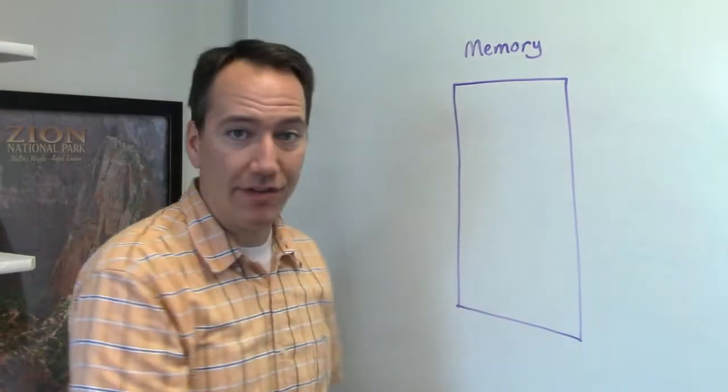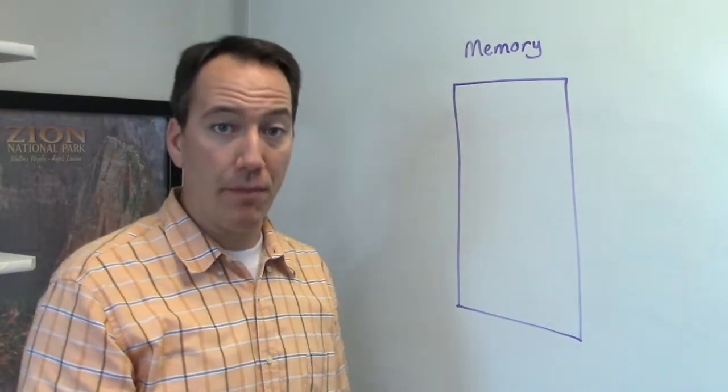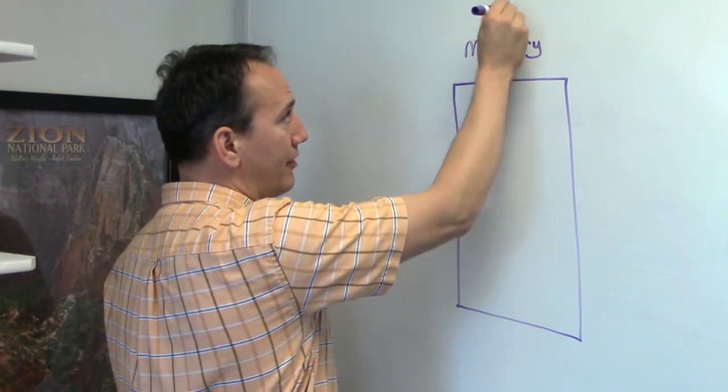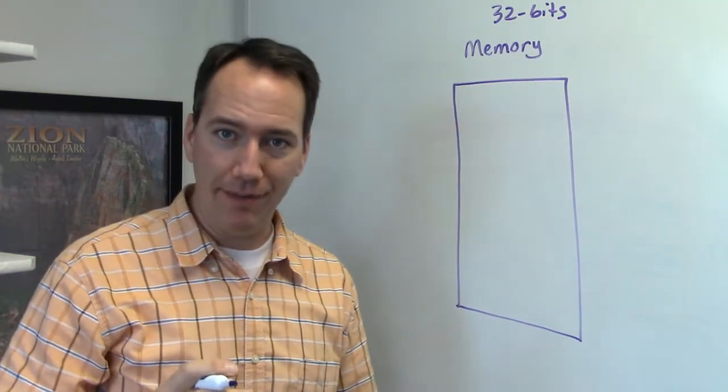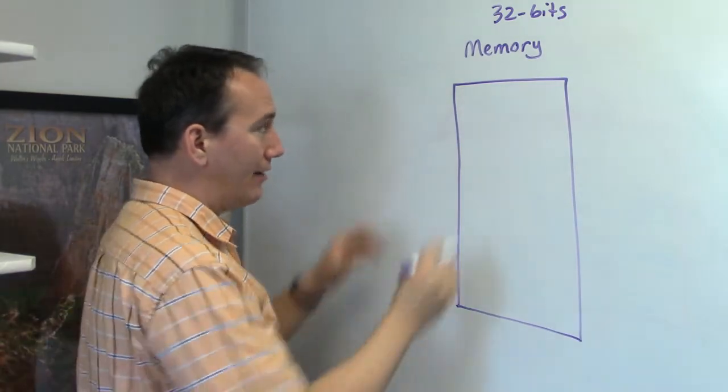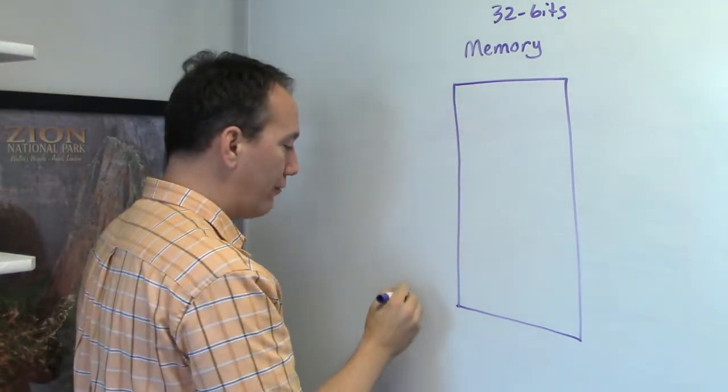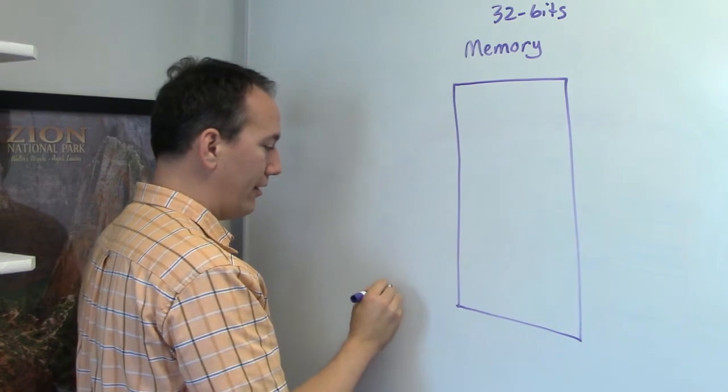So this rectangle represents the memory that a computer program can see. And typically, you're either going to have 32 or 64 bits. I'm just going to use 32 today because it's a little bit simpler to do the math. And with 32 bits of addresses, we've learned that you can go from address zero...